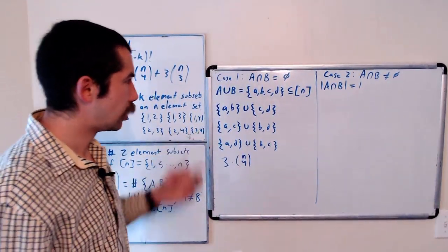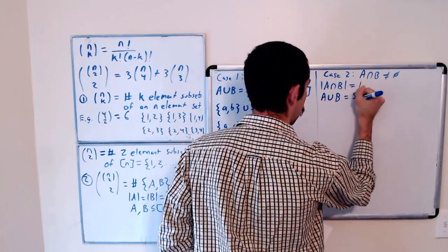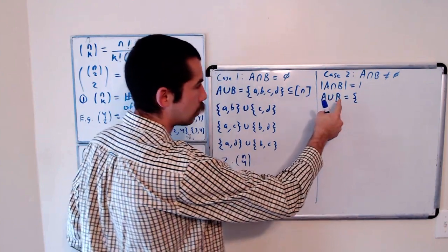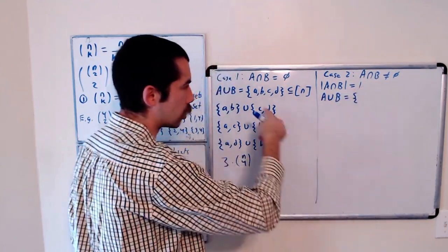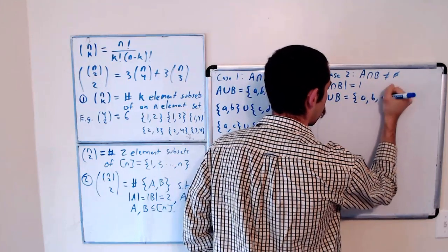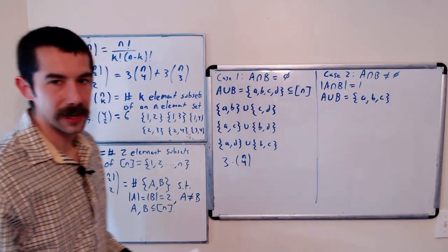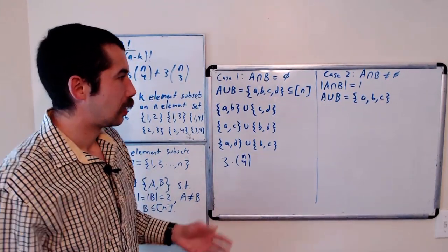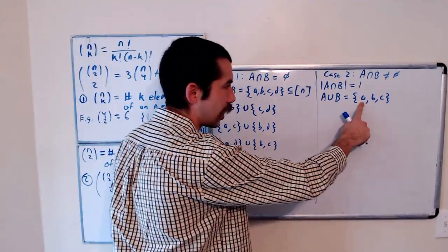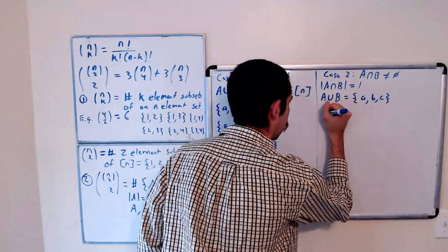Their union, a union b, is going to be, well, they have an intersection of 1. So it's not going to be all 4. There's just going to be 3 elements in the union. And there's a number of ways that this could happen. It's either a is in both sets, b is in both sets, or c is in both sets. So let's list those out so you believe me.